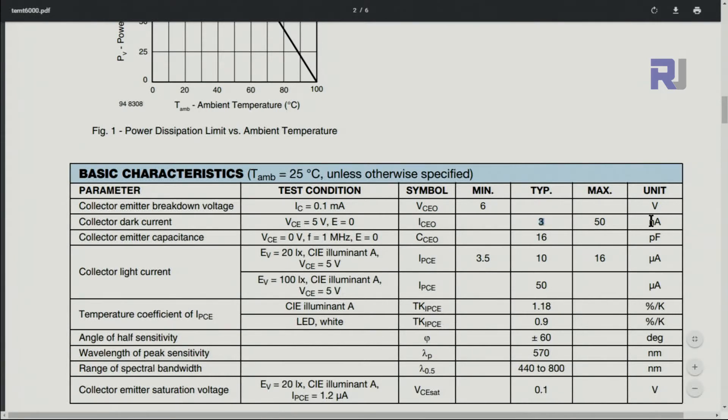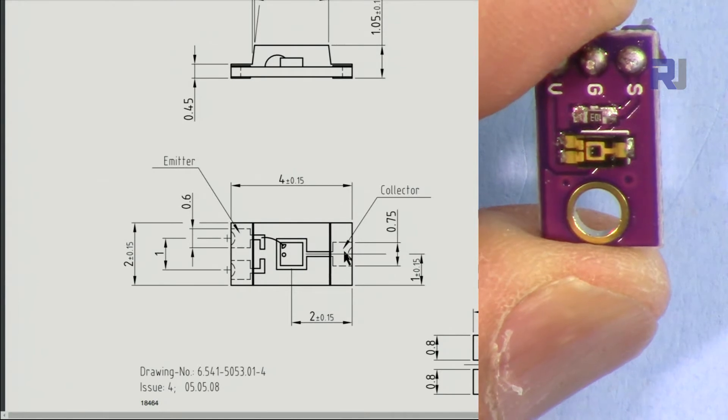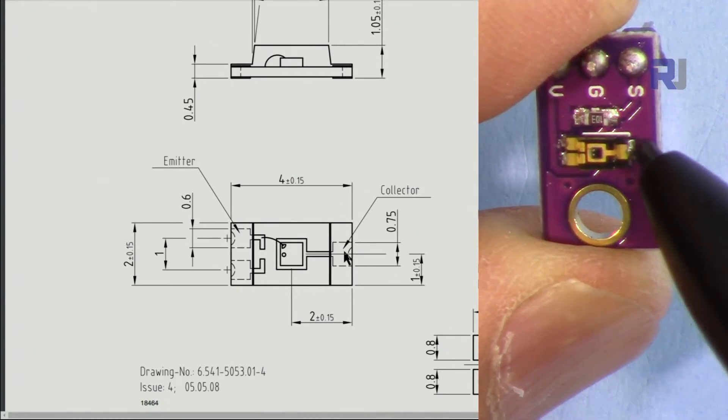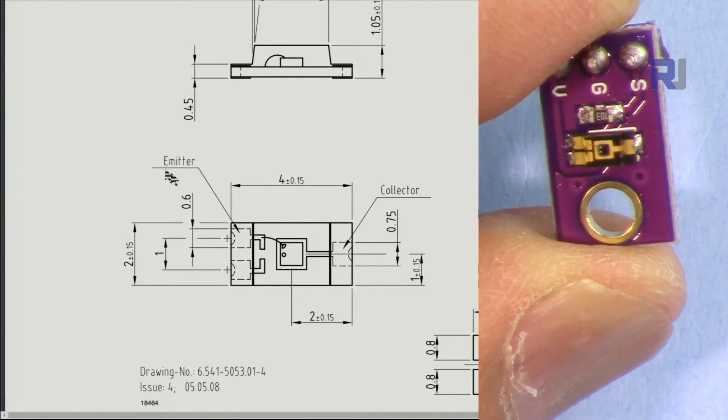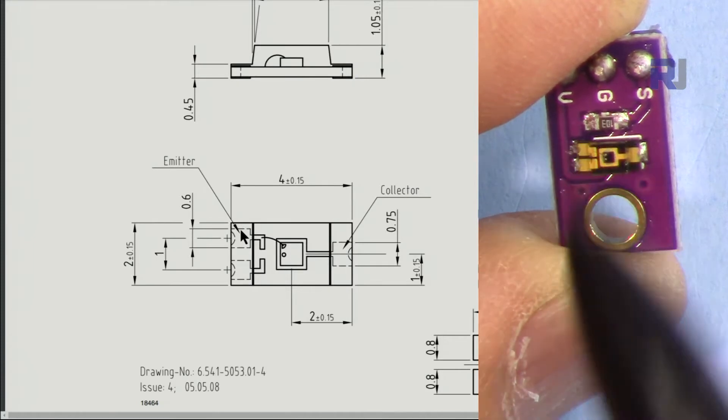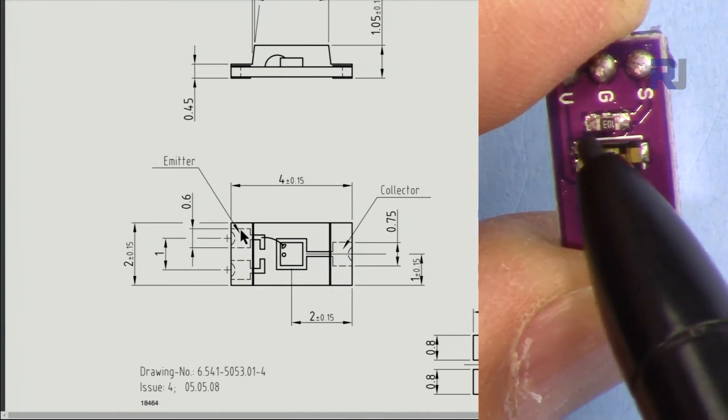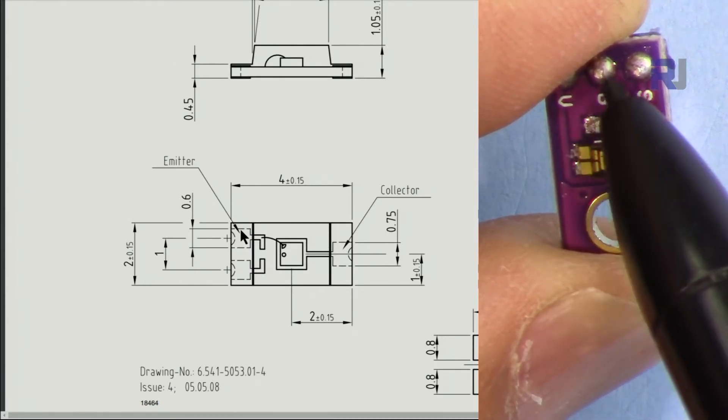As you can see here, this is the collector which is on this side, and the two pieces, one there and here, this is the emitter. So that side is the emitter which is the signal out. This is connected with a kilohm resistor to the ground.